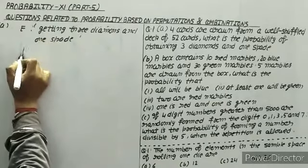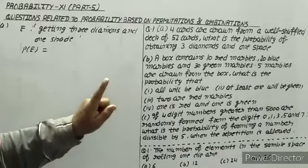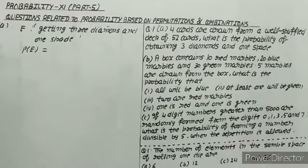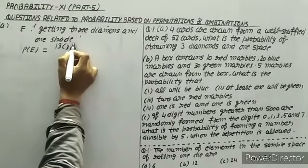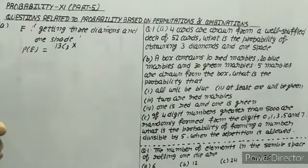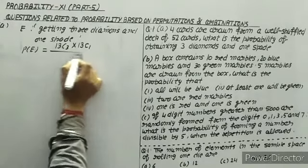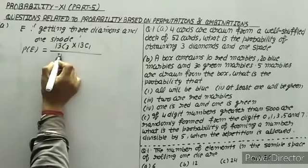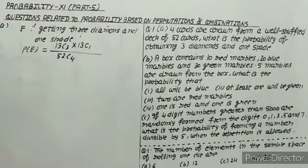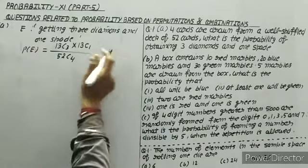The probability of event E is given by favorable outcomes. There are 13 diamonds, and out of 13 we have to select 3, so that is 13C3. For spades, the number of spades is also 13, and we have to select 1, so that is 13C1. The total outcomes: 52 cards, select 4, so this is 52C4. Therefore, the probability of event E is 13C3 × 13C1 / 52C4. After calculation, you will get the answer.